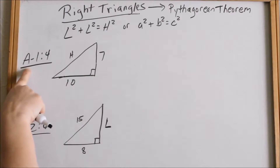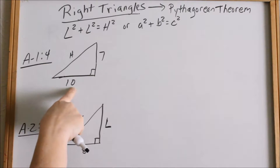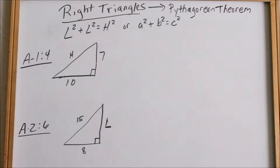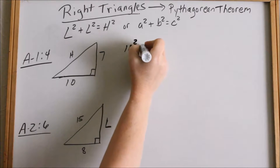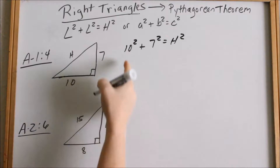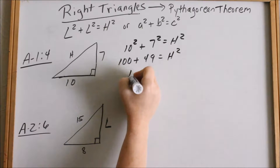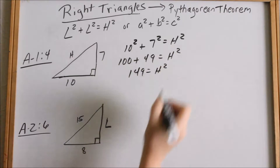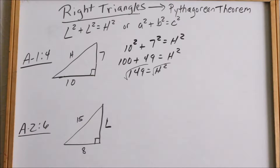We're in Appendix A, page 1 — problem number 4. You have this right triangle and we're trying to solve for the hypotenuse. Using Pythagorean Theorem, 10 squared plus 7 squared equals the hypotenuse squared. 10 squared is 100, 7 squared is 49, that's 149. But we're not solving for H squared, we're solving for H, so we take the square root of both sides — and that's actually a decimal.